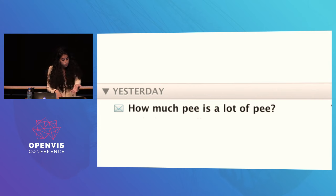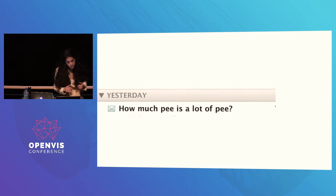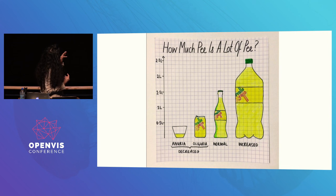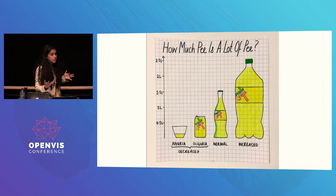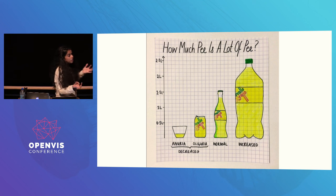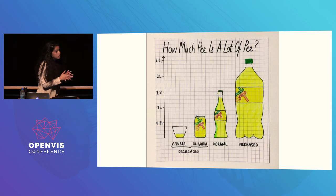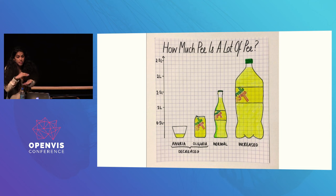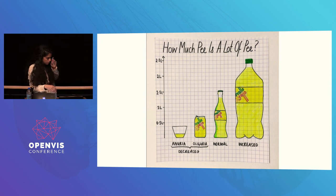Here's one I did in response to the question 'how much pee is a lot of pee?' I try to use everyday objects whenever I can to convey scale — not everyone necessarily grasps the same units of measurement. Even if we use the same units, especially large ones, it's really difficult to understand how much we're talking about. But pretty much everyone has held a one-litre bottle of liquid in their hands at some point, and that can help them understand it.